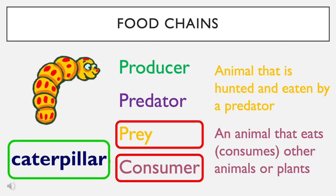Next in the food chain, you see the caterpillar. The caterpillar falls into two categories. It is a consumer because it is an animal that eats or consumes other animals and plants — it can eat the leaves and the trees. And it is also prey because it is an animal that is hunted and eaten by the predator.